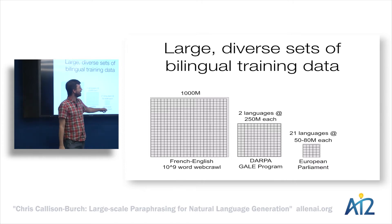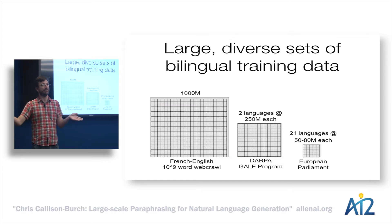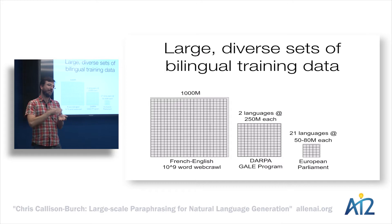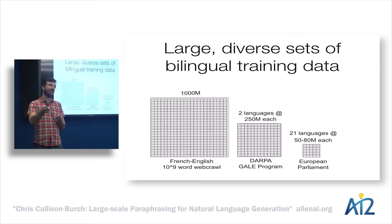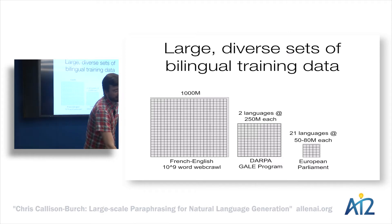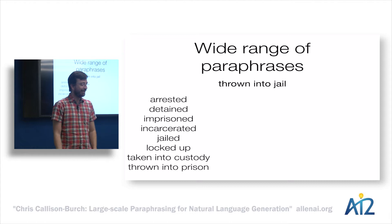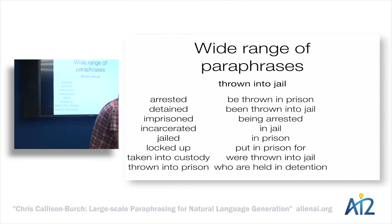We can also easily get many languages from the European Union, because by law they publish in all official EU languages. As a result, we can pivot over any of these foreign languages since we're interested in English paraphrases — not only French, but also German, Arabic, and others. Because we have such a large and diverse set of training data, we get a wide range of paraphrases. For 'thrown into jail,' we get not only 'imprisoned' but also 'arrested,' 'detained,' 'incarcerated,' 'jailed,' 'locked up,' 'taken into custody,' 'thrown into prison.'